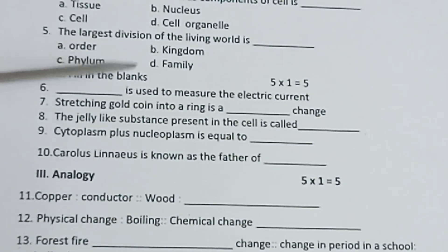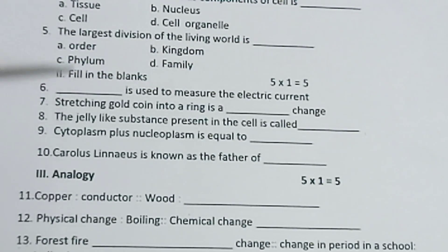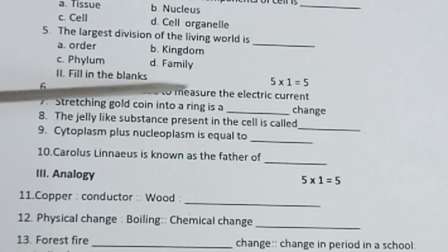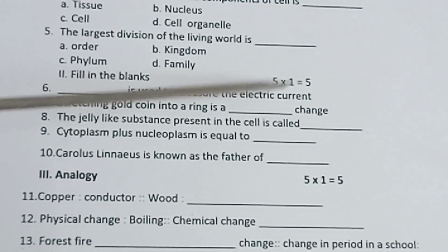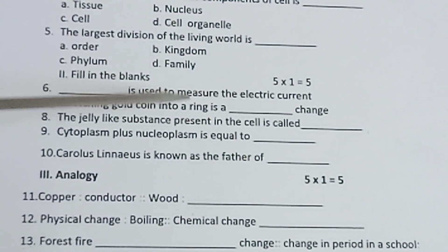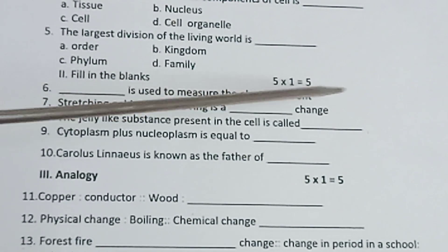Section II — fill in the blanks. 5 into 1 is equal to 5. Sixth one: Dash is used to measure the electric current. Seventh one: Stretching a gold coin into a ring is a dash change.